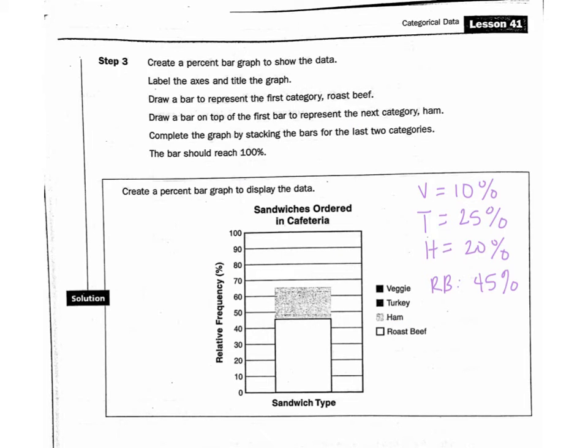Here's step three. We're going to create a percent bar graph to show the data. We're going to label the axis, which are the x and the y, to show what is being represented. The frequency is going to be the y, what's being represented is the x, and we're going to have our title.